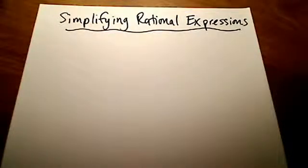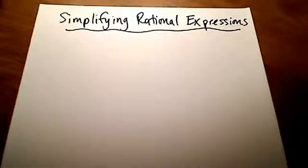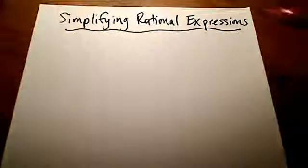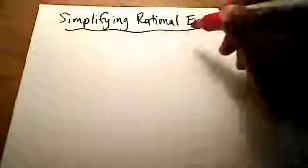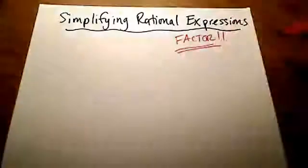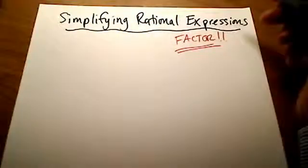I showed in a previous video what a rational expression is. A rational expression is simply just a fraction, but not just any kind of fraction like one-half or three-fifths — it's fractions that have variables in them. And the way to simplify any rational expression is to factor. Factor is the name of the game when it comes to simplifying rational expressions.